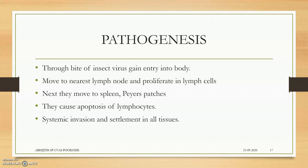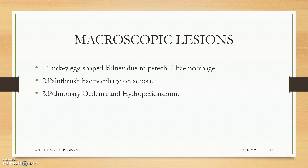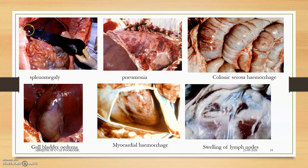Systemic invasion occurs and the virus settles in all tissues except the gastrointestinal tract. Macroscopic lesions include turkey egg-shaped kidney due to petechial hemorrhage — also found in classical swine fever, but less distinct in African swine fever. There are paintbrush hemorrhages on the cecum and colonic serosa, pulmonary edema, and hydropericardium. Splenomegaly is evident. There are also many point hemorrhages due to secondary Bordetella infection.